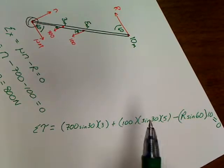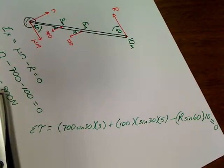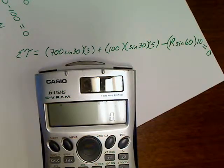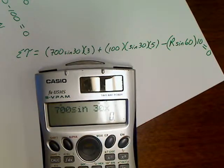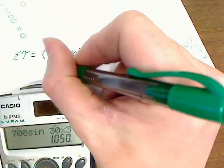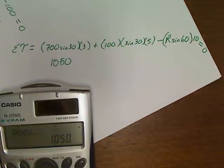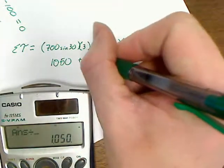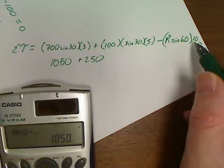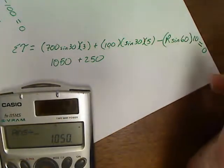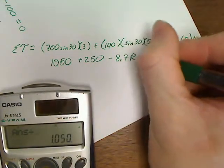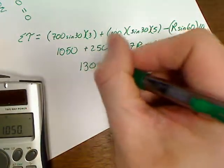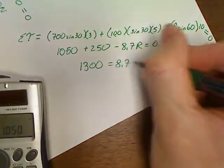Now I can already do some stuff in my head here a little bit. Sine of 30 is a half. So we're going to go, and I'm just going to plug it in the calculator here. So let's see what we can get. I've got 700 sine 30 times 3, so that's 1,000, and so there's 1,050. Then I've got, oh let's do this, half of 100 is 50, 50 times 5 is, so that's going to be plus 250. Then sine of 60 is 0.866 times 10 is 8.6. So I'm going to go with minus 8.7R equals 0.